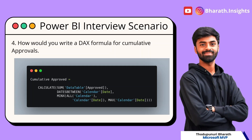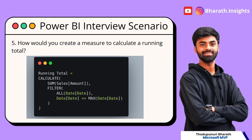The next question: how do you write a DAX formula for cumulative approval? The client wants to understand cumulative approvals over time. You can use DATESBETWEEN along with MINX and your calendar table — CALCULATE, count of approvals, DATESBETWEEN, calendar date, MINX with ALL of calendar date, and MAX of calendar date — to get cumulative approvals within the period. For running total: CALCULATE, SUM of sales amount, FILTER ALL of date where date is less than or equal to MAX of calendar date.